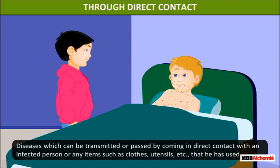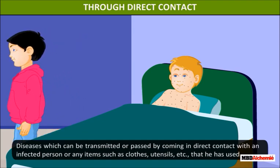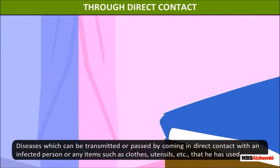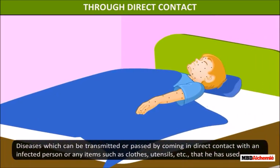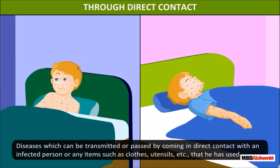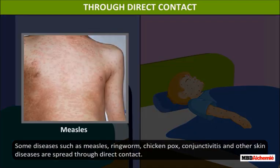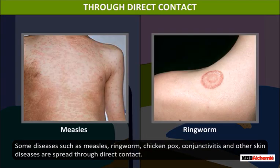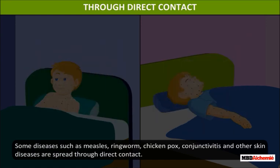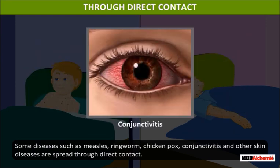Through direct contact: diseases which can be transmitted by coming in direct contact with an infected person or any items such as clothes, utensils, etc. that they have used. Some diseases such as measles, ringworm, chickenpox, conjunctivitis, and other skin diseases are spread through direct contact.